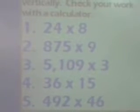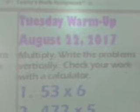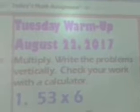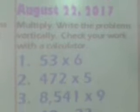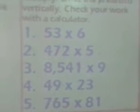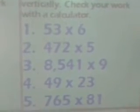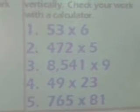Moving on to Tuesday. You can get this done tonight if you want a head start for tomorrow. Tuesday warm-up, August 22nd, 2017 — same directions: multiply, write the problems vertically, check your work with a calculator. Go ahead and freeze that frame. Number 1: 53 times 6. Number 2: 472 times 5. Number 3: 8,541 times 9.